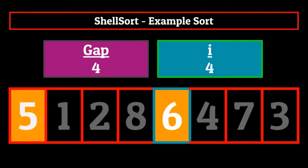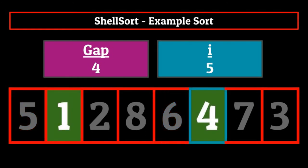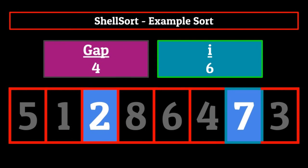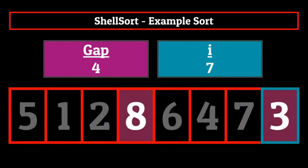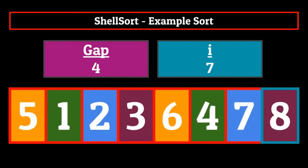We then go back to the inner for loop and increment I, which makes it five. Now we sort the sublist that contains one and four. Since one and four are already in sorted order, we don't need to make any changes, and we simply increment I so that it's now six. Looking at the sublist that contains two and seven, these elements are also in sorted order, so no changes need to be made. Finally, incrementing I one more time to seven means we sort the sublist containing eight and three. Since eight and three are out of order, we swap them to complete the insertion sort for that sublist. And with that, we have completed our shell sort with a gap of four elements.